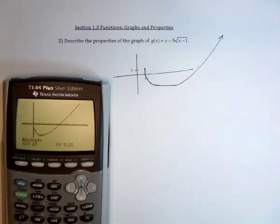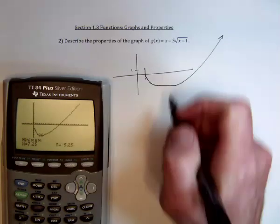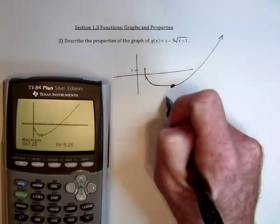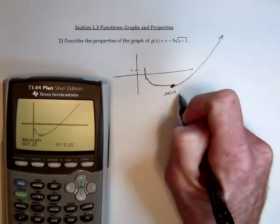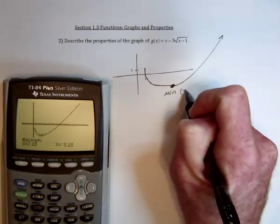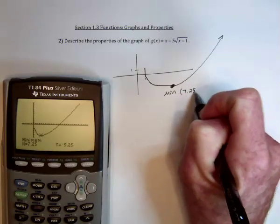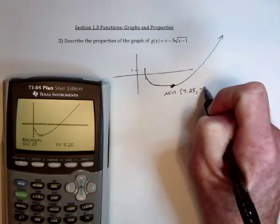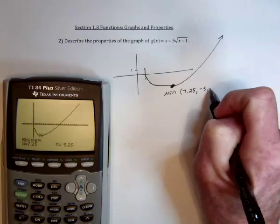Hit enter, and it will find the minimum value. So it's got a minimum at 7.25, negative 5.25.